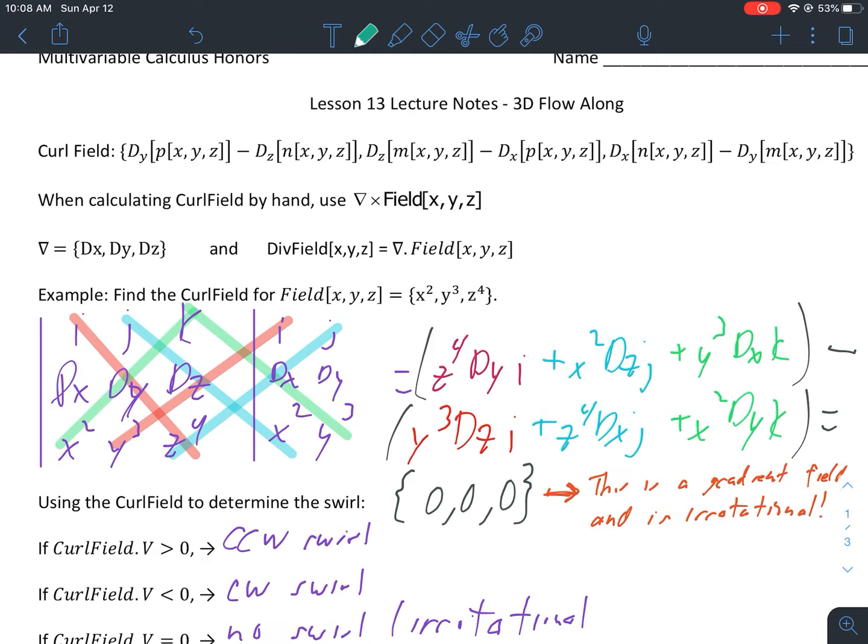You can see as we do the cross product everything cancels out to zero, which means this is a gradient field then it has no rotation, no swirl. We say it's irrotational. There's other words that people in the math world use as well, but for the most part I think in our class we just call it irrotational.